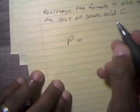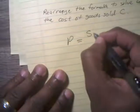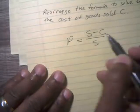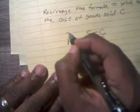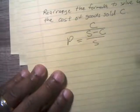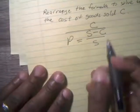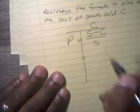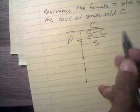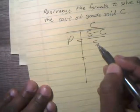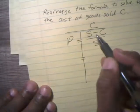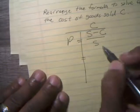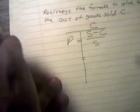P equals S minus C over S, and I want to solve for C. All right, so let's begin doing that. I want to get the equal sign straight. I've got division and subtraction in there, so first thing we're going to do is deal with the division.